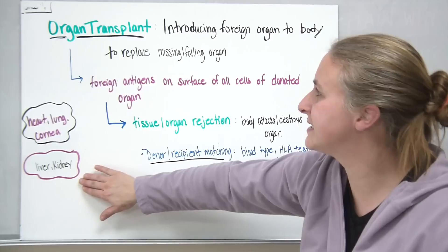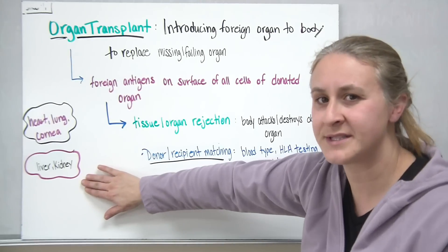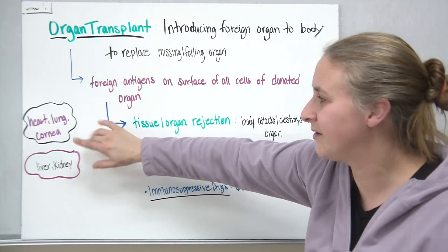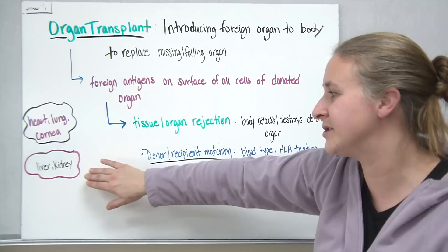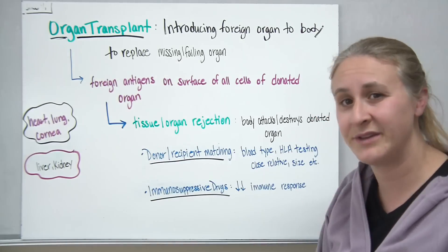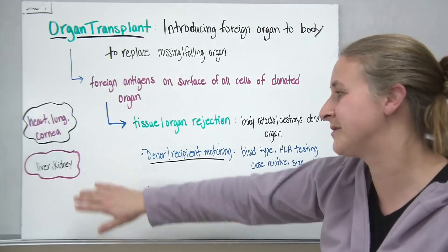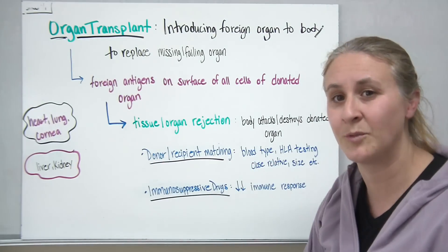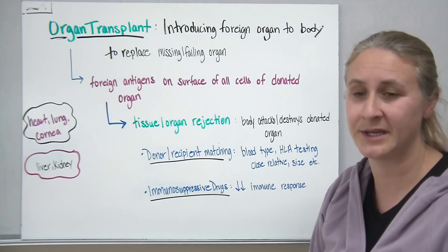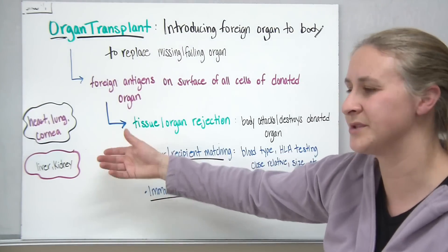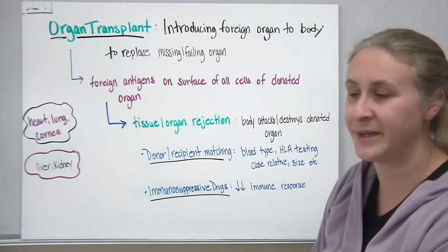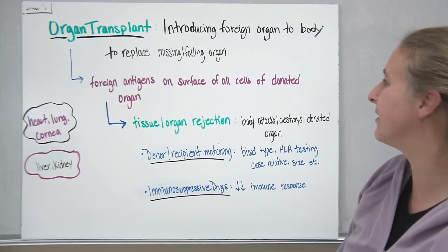Examples of organs that can be transplanted include the heart, lung, and cornea of the eye. Partial liver transplants are also possible, and living donors can donate one kidney or even part of a lung, though a living person would not typically give up a healthy lung.